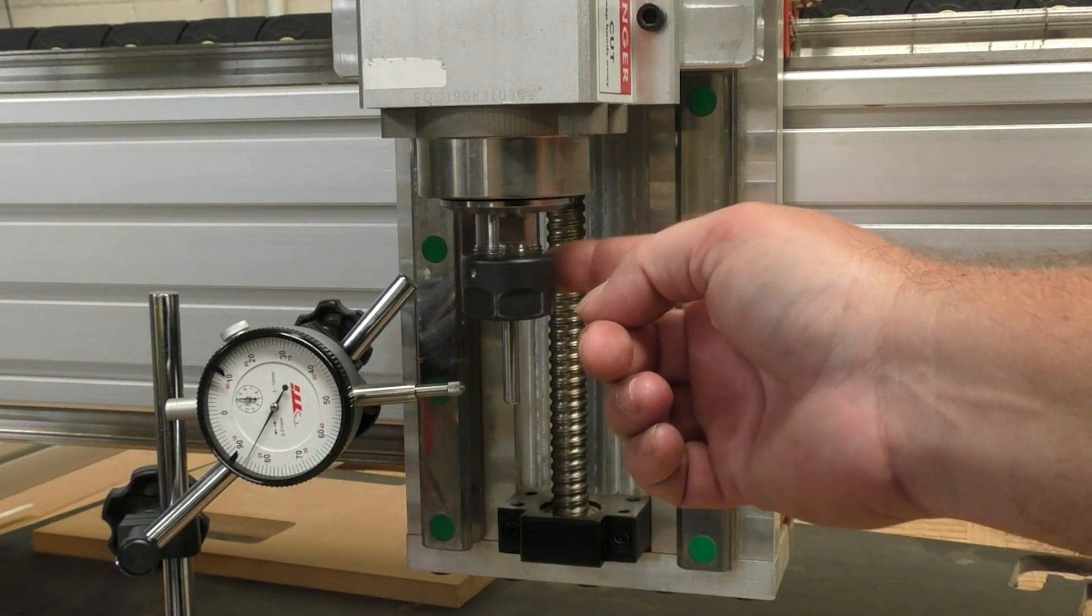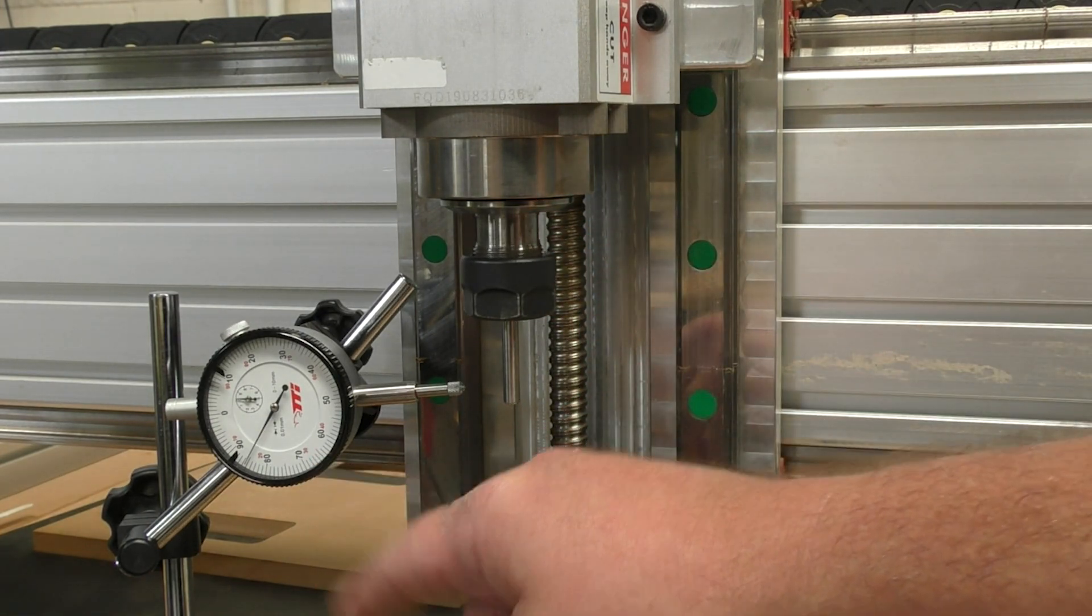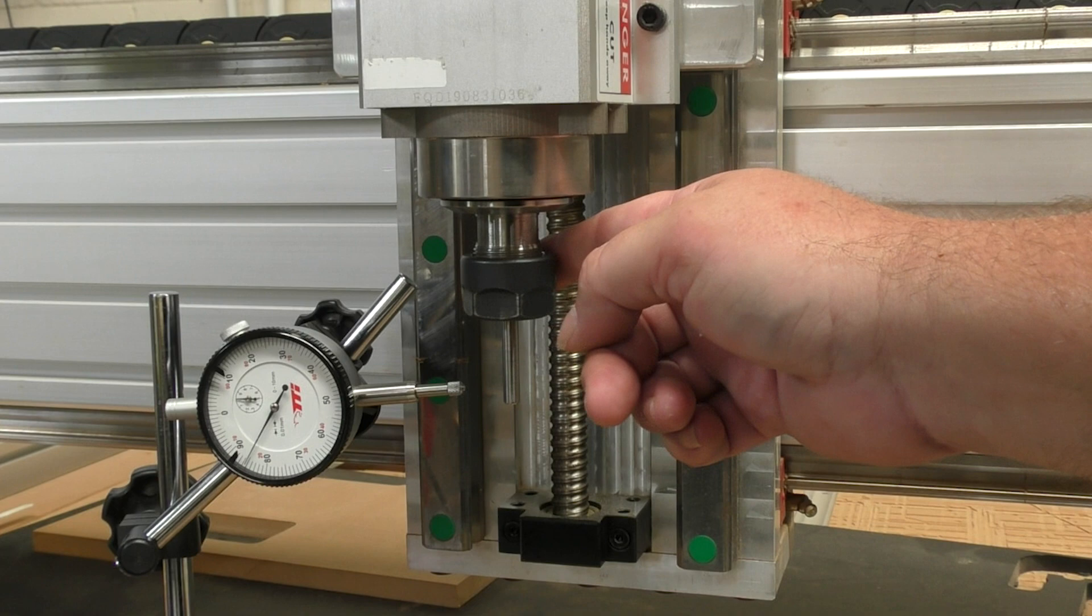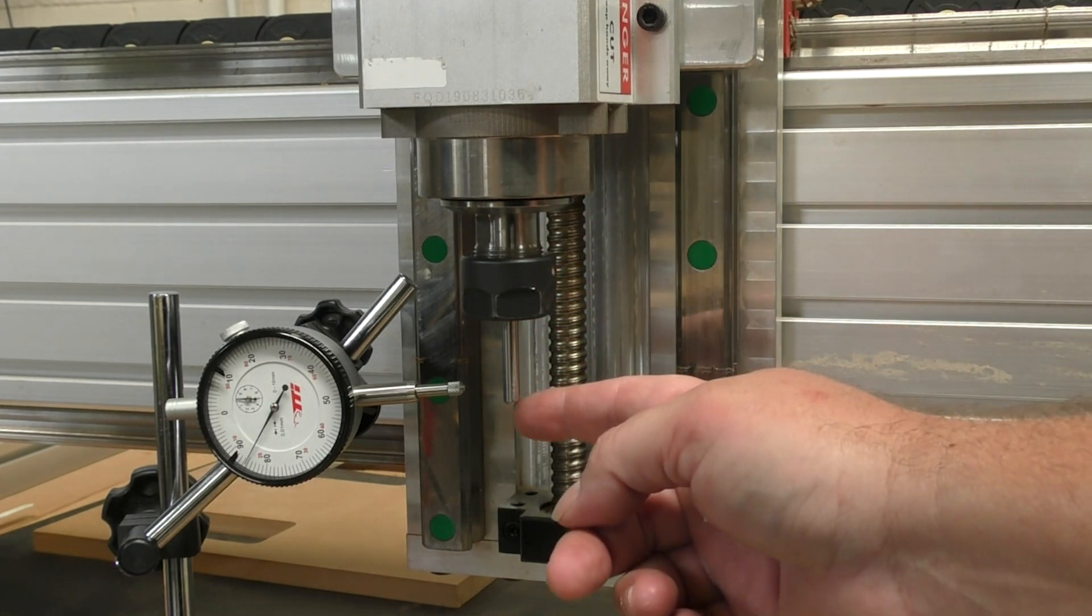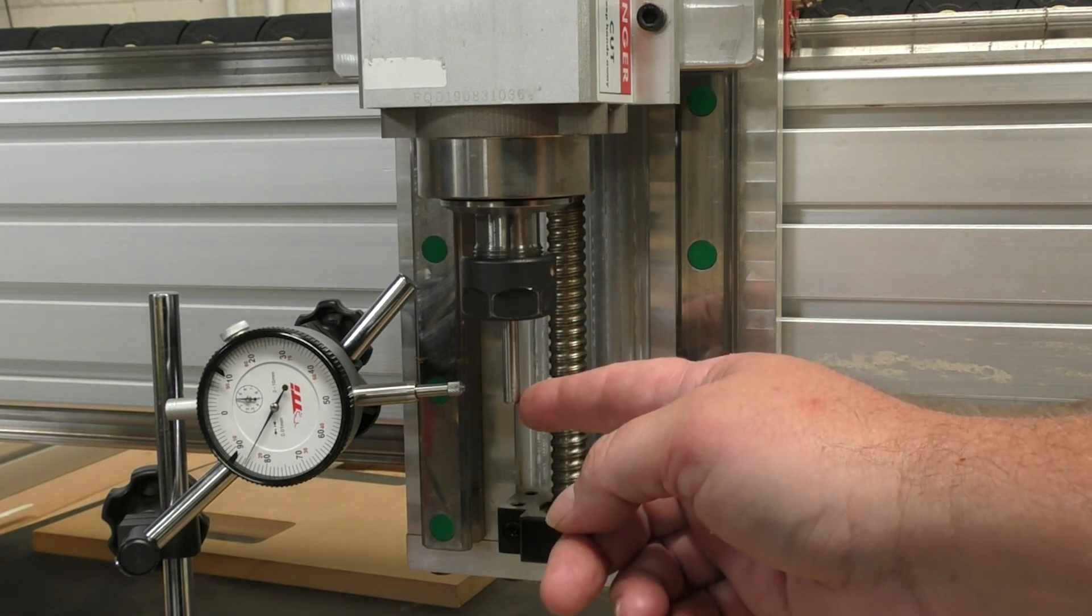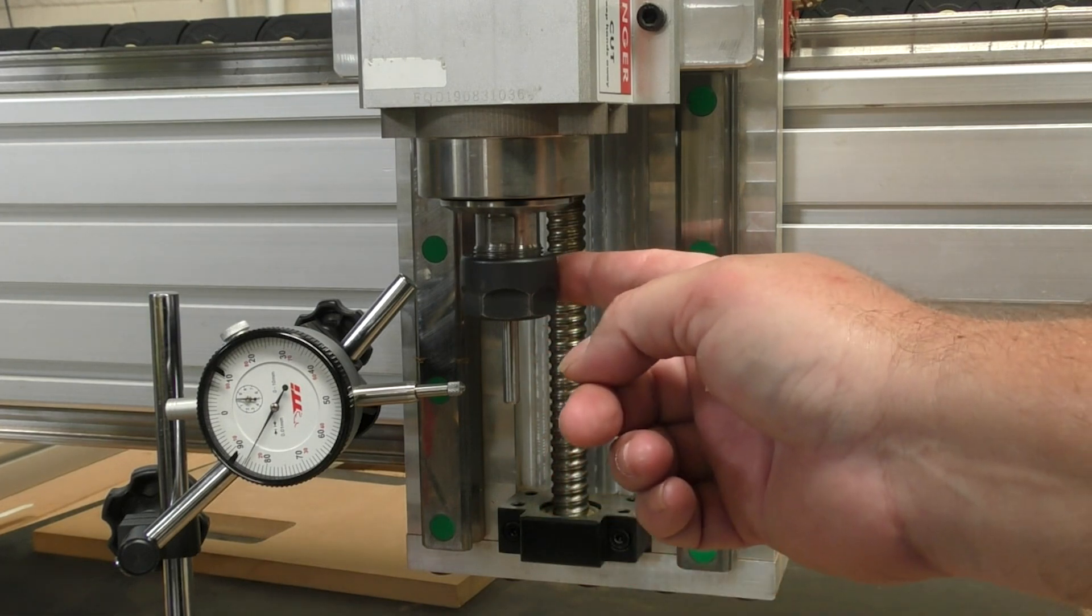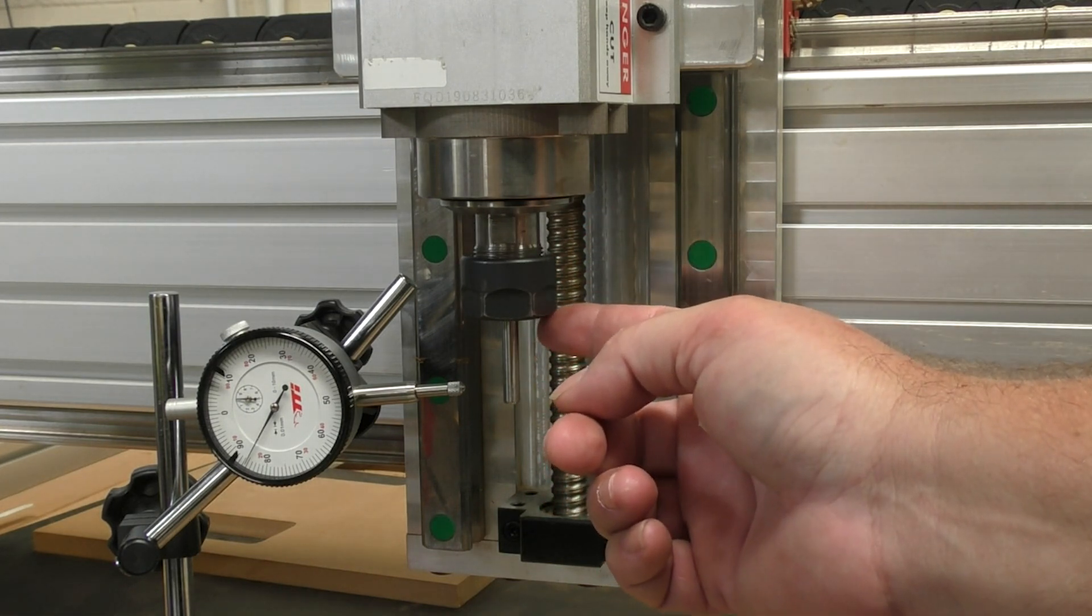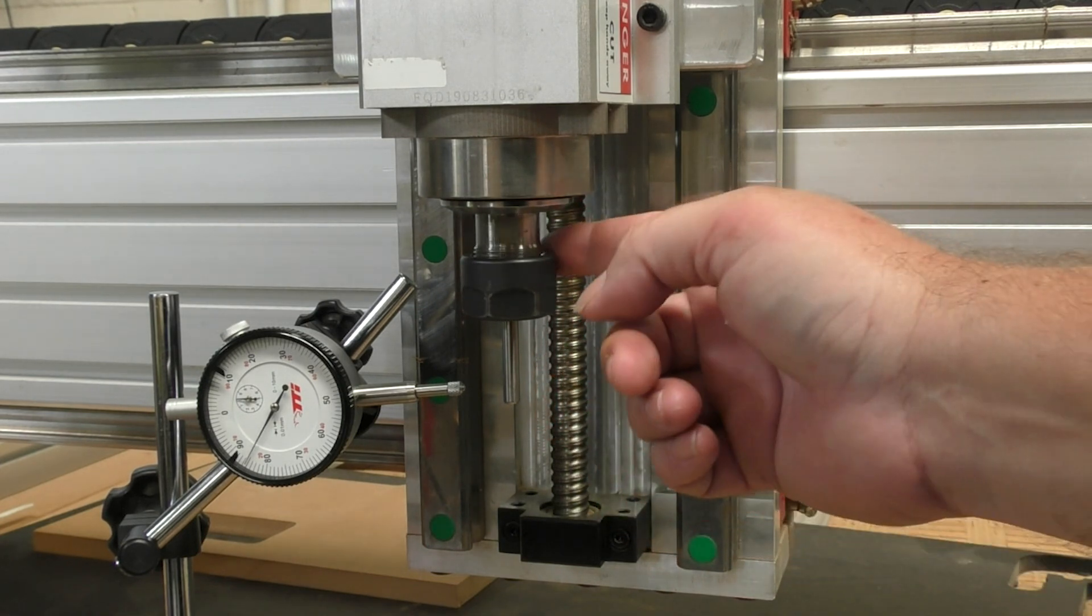The purpose of this experiment with the dial gauge is to actually try to measure the amount of run out that we do have on this collet and on the tip of this tool. Run out is basically what happens when your tool is not 100% straight inside the actual collet itself, or if there's something wrong with your spindle. Most spindles are actually very good from the factory so they have a very low run out rating.